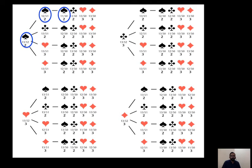Likewise, for the club, the next card probability is 13 over 50, since no club has been drawn yet and 50 cards remain. Similarly, for heart it is 13 over 50, and for diamond it is 13 over 50. This is how we can calculate the probability, and this is continued for all the remaining cards shown in this figure.